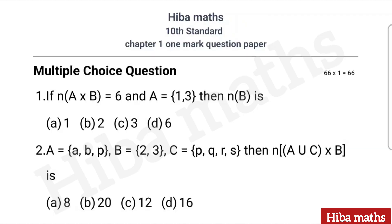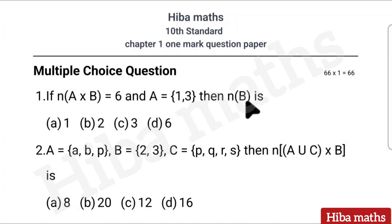First question: If n(A × B) is equal to 6 and A is equal to {1, 3}, then n(B) is — options are 1, 2, 3, and 6. Please give me just a few seconds to answer in the comments.